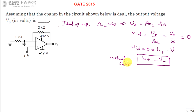According to virtual short concept, for ideal op-amp, inverting and non-inverting terminals will be at same voltage, even though there are two different nodes. Even though there are different nodes, they will be at the same voltage.